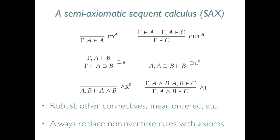This pattern of replacing non-invertible rules with axioms holds for the other propositions as well. We can even construct semi-axiomatic sequent calculi for intuitionistic linear and ordered logics, and we conjecture that all intuitionistic sequent calculi have semi-axiomatic versions.